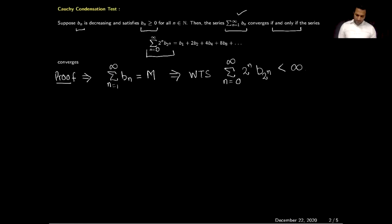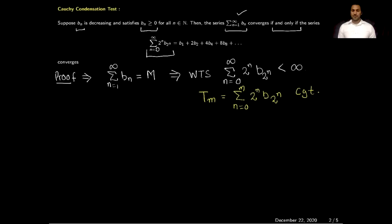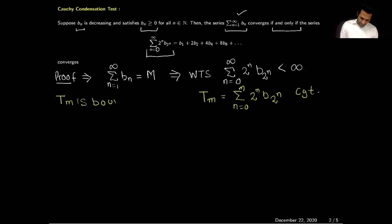Using the definition of convergence of a series, we need to show the partial sum T_m, where T_m = summation from n=0 to M of 2^n * B_{2^n}, is convergent. To show this partial sum is convergent, I will use the monotone convergence theorem — I will show that this partial sum is bounded above and is also an increasing sequence.